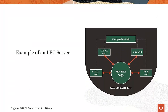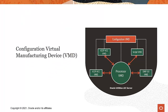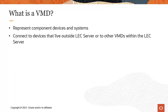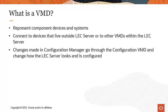Here is an example of a possible configuration of an LEC Server. There are really an unlimited number of possible configurations, with the only constant being the configuration Virtual Manufacturing Device, or VMD. A VMD is used to represent component devices and systems and connect to devices that live outside the LEC Server or to other VMDs on the LEC Server. Changes you make in Configuration Manager go through the configuration VMD and change how your LEC Server looks and is configured.